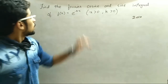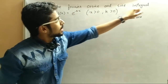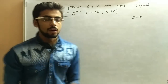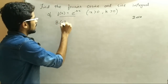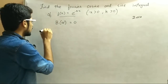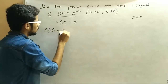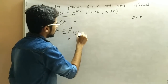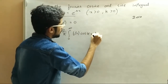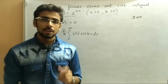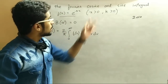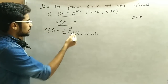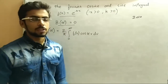Now it is told: find the Fourier cosine and sine integral. So in the cosine integral, you very well know that our b(α) is zero. So we will only mind a(α). So a(α) equals 2/π times the integral from zero to infinity of f(v) cos(αv) dv. We discussed cosine and sine integrals in the previous video. In cosine integral, b(α) is zero.